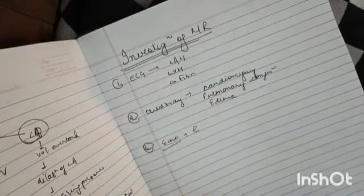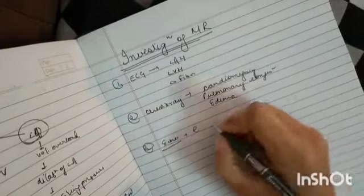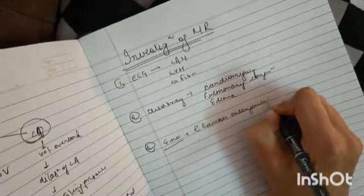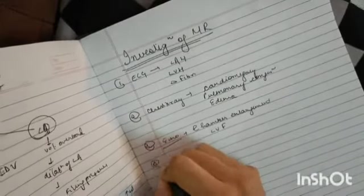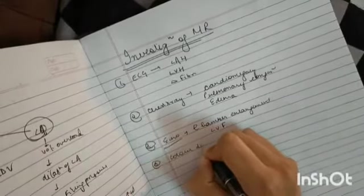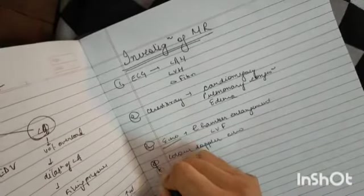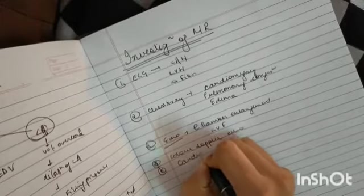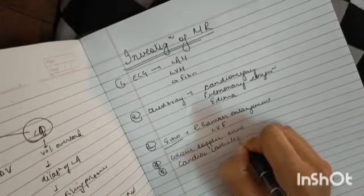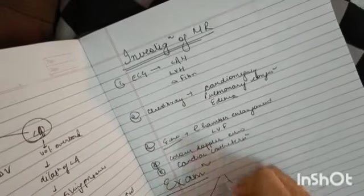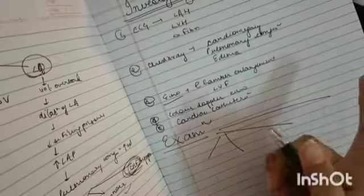In echocardiography, we'll see there will be chamber enlargement and left ventricular function. Then we can also do color Doppler echocardiography and we can do cardiac catheterization.